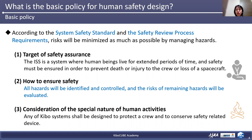First, for the target of safety assurance, the ISS is a system that includes humans and safety must be ensured in order to prevent death or injury to the crew or loss of a spacecraft. Second, regarding how to ensure safety: in the development and operation of KIBO and new payloads, hazards will be identified and controlled. The first priority for control is to eliminate the hazard, and if that is not possible, you should apply other control methods. Finally, you need to consider the special care of human activities — any KIBO systems shall be designed to protect the crew and to conserve safety-related devices.